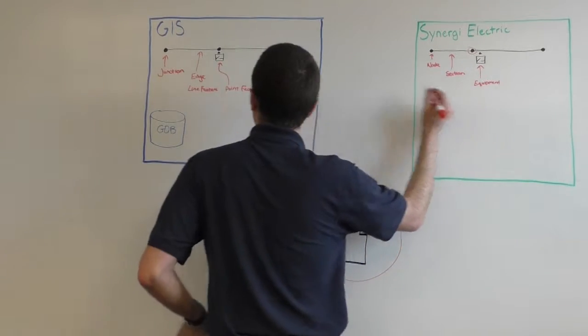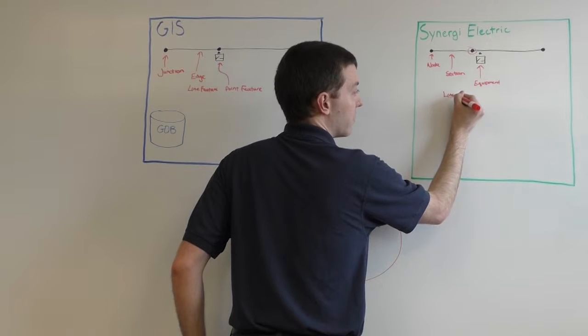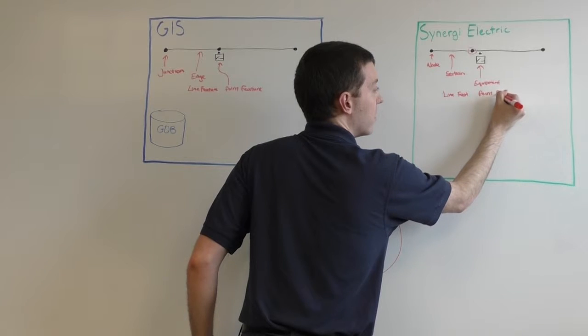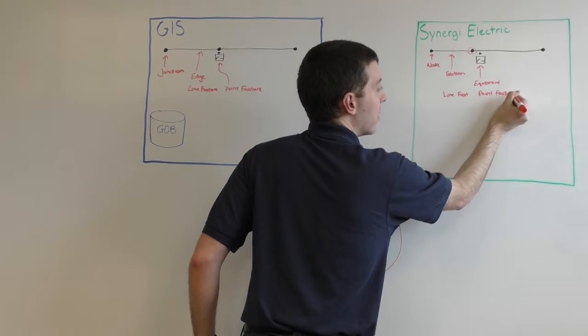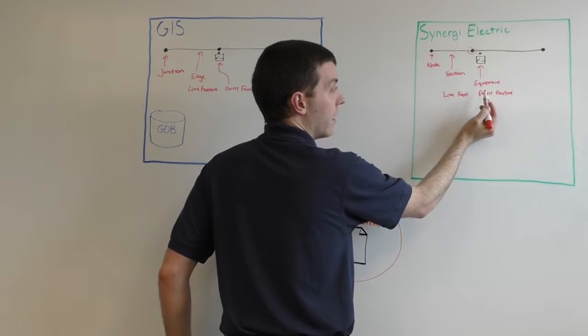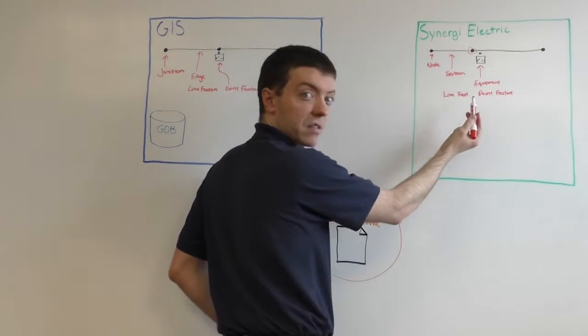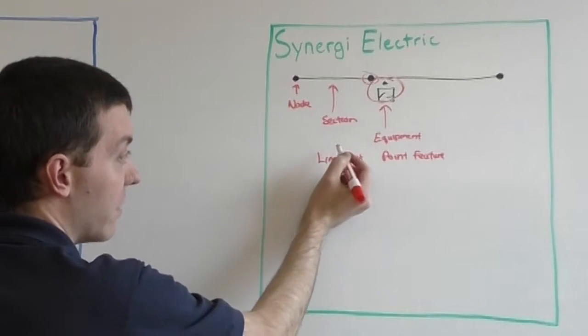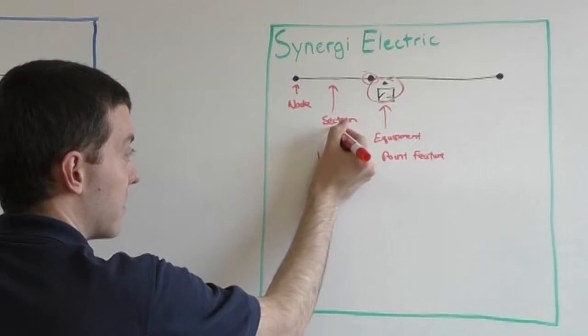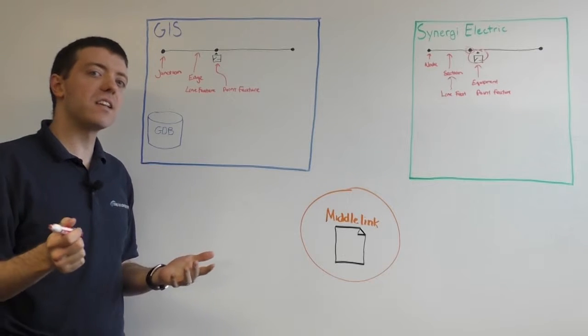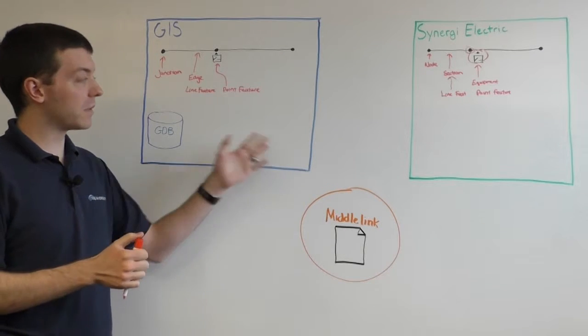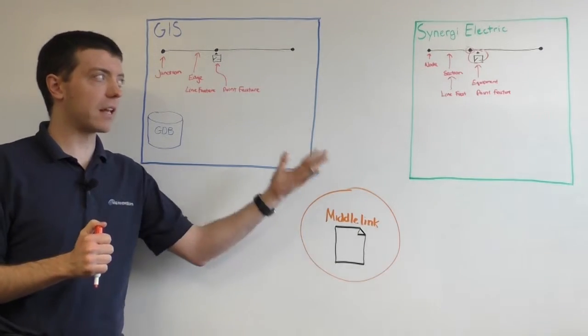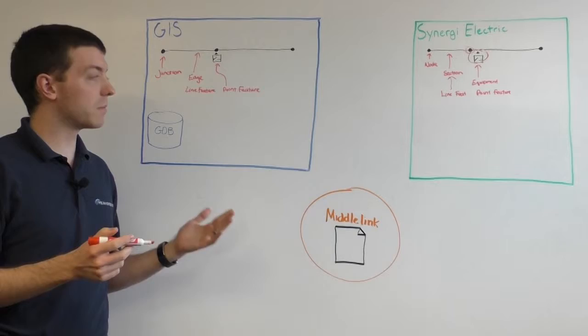So when you consider a feature, you have a line feature and a point feature in GIS, and the point features, the shape data corresponds to a node. But the extended data, say if it symbolizes something like a switch, will correspond to this piece of equipment. And a line feature still does directly correspond to a section. So you can see that a lot of this data differs between the two systems, and we're going to need to have an effective method to be able to transfer and translate the data over into Synergy. And this is what so many people struggle with.